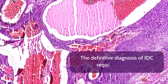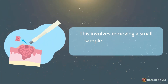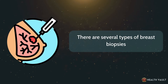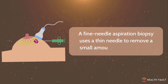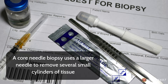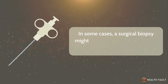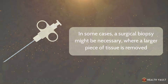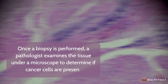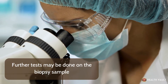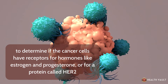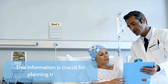The definitive diagnosis of IDC requires a biopsy, which involves removing a small sample of breast tissue for examination under a microscope. There are several types: a fine needle aspiration biopsy uses a thin needle to remove a small amount of tissue or fluid; a core needle biopsy uses a larger needle to remove several small cylinders of tissue; and in some cases, a surgical biopsy might be necessary. A pathologist then examines the tissue to determine if cancer cells are present, and further tests may assess whether the cancer cells have receptors for hormones like estrogen and progesterone, or for a protein called HER2 — information crucial for planning treatment.